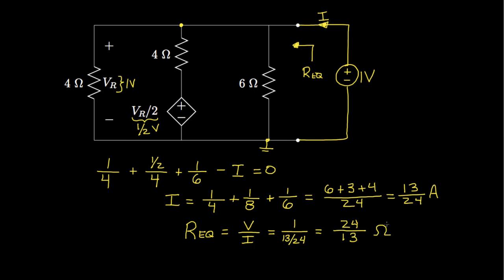So those two examples show how we can provide either a known current or a known voltage, then measure the resulting voltage or current, and determine the equivalent resistance for a circuit that contains resistors and dependent voltage or current sources.